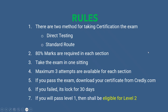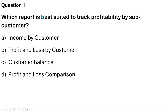Question 1: Which report is best suited to track profitability by sub-customers? The four options are: income by customers, profit and loss by customers, customer balance, and profit and loss comparison. The correct answer is Option B: Profit and Loss by Customers.